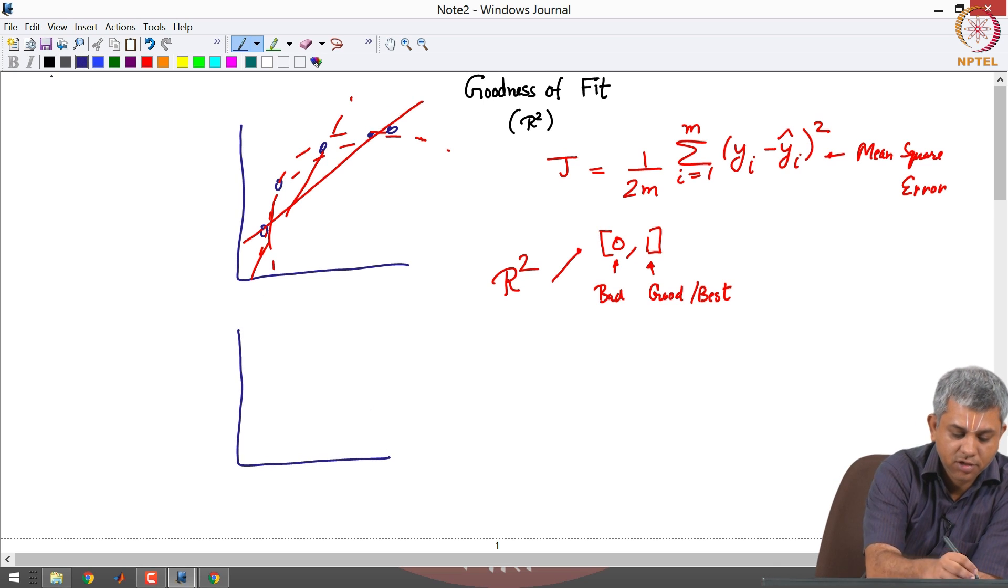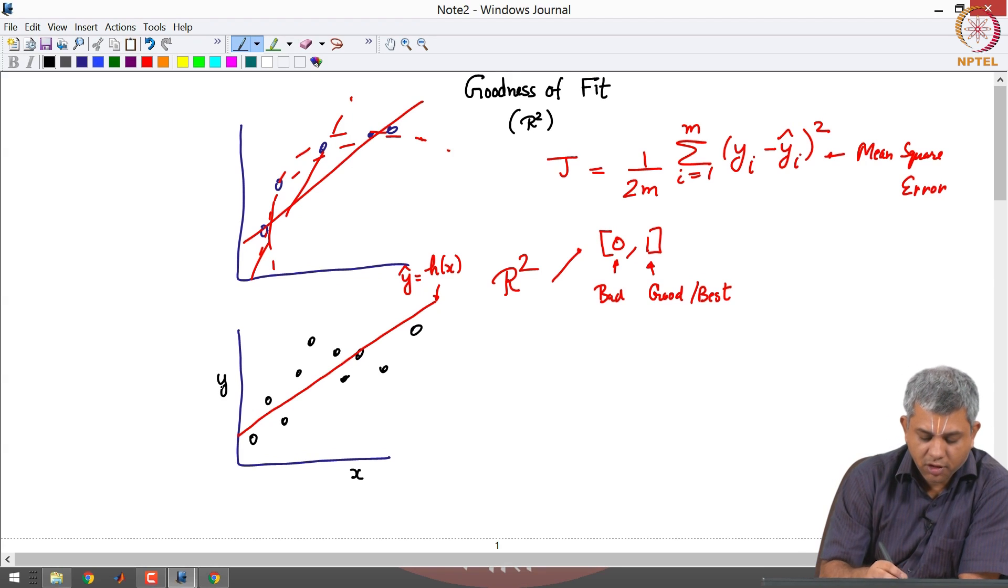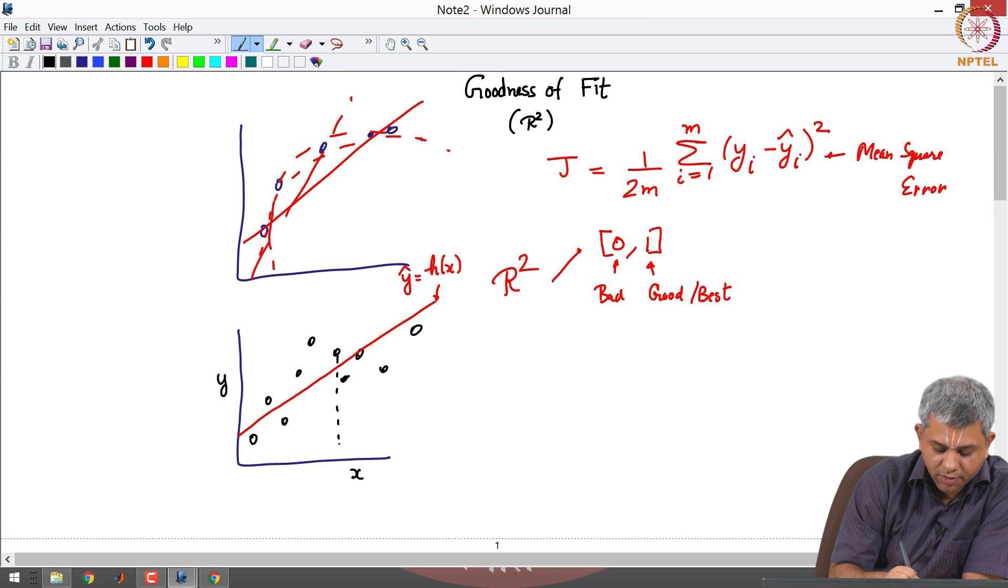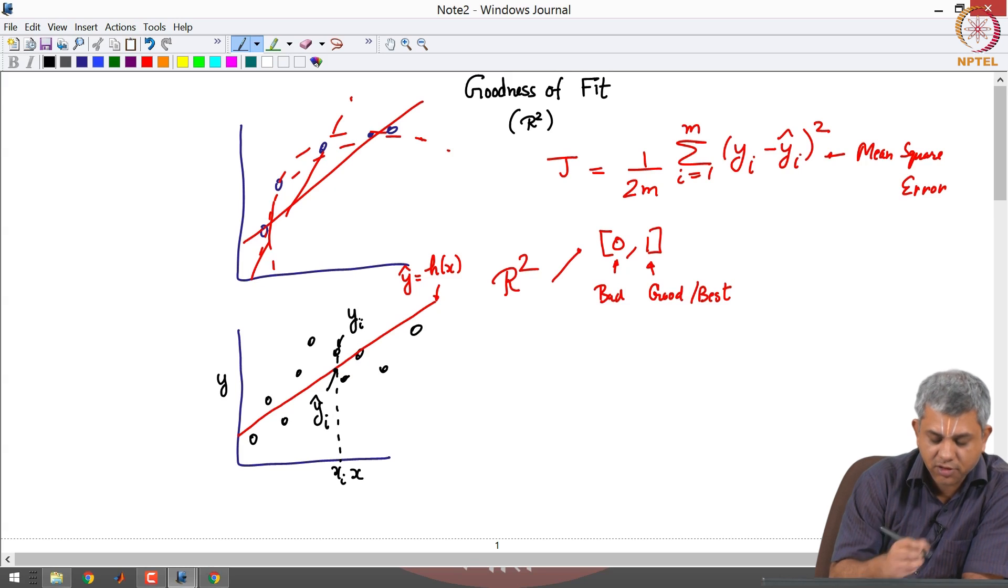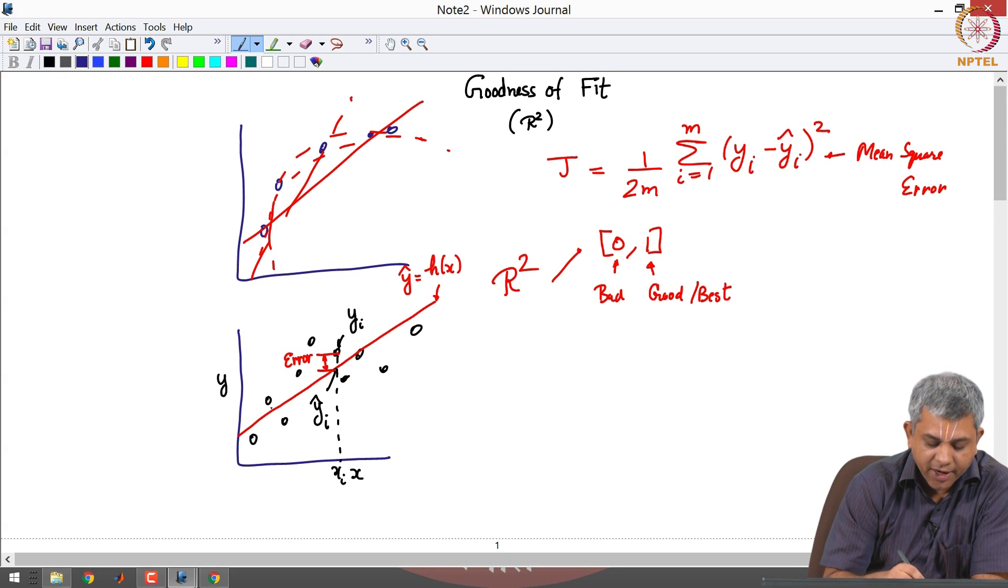Let us say once again that this is our original data, and I have my hypothesis function h of x. This is my original data x versus y. Now the ground truth at any particular point is y, but what I am predicting is y hat. So let us say this is the point xi, this is y hat i, and this is yi.